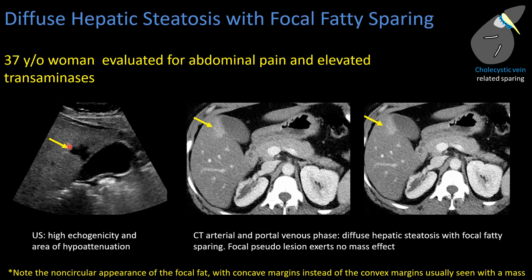This non-circular region of hypoechogenicity in the setting of diffuse steatosis, especially when it abuts the gallbladder, is classic for focal fatty sparing. Additional imaging is often unnecessary unless the patient has risk factors for metastatic disease or primary hepatic neoplasm. This same patient did receive a CT — though MRI is preferred to confirm focal fat — and it shows diffuse low attenuation of the liver with a geographic, non-circular area of hyperattenuation corresponding to focal fatty sparing.